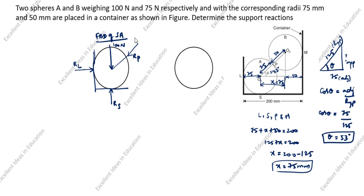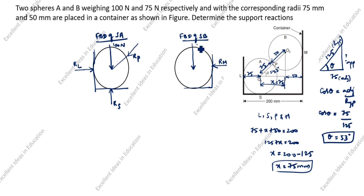Next we draw the free body diagram for sphere B. Reaction RM is exactly perpendicular to the surface — this is RM. The weight of sphere B acts downward through the center, which is 75 Newton. Reaction RP acts between the centers of sphere A and sphere B. The arrow for RP goes upward. This is the free body diagram of sphere A and sphere B.